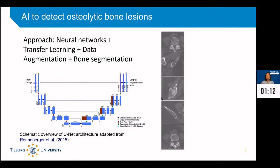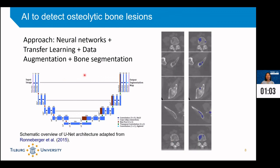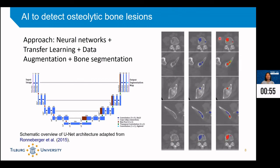We are also collaborating with a medical center in Germany to extend our dataset. As you can see, these are our image patches, and the annotations from our radiologists are shown in blue. The third row shows the results of our segmentation: green represents what we found, red represents the overlap between our segmentation and the ground truth — so red is good — and blue represents lesions that we missed.